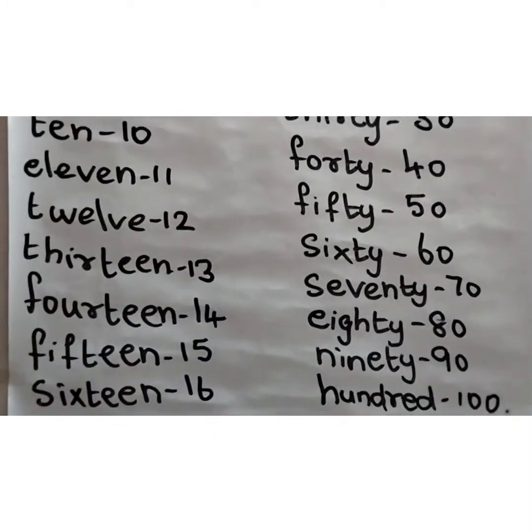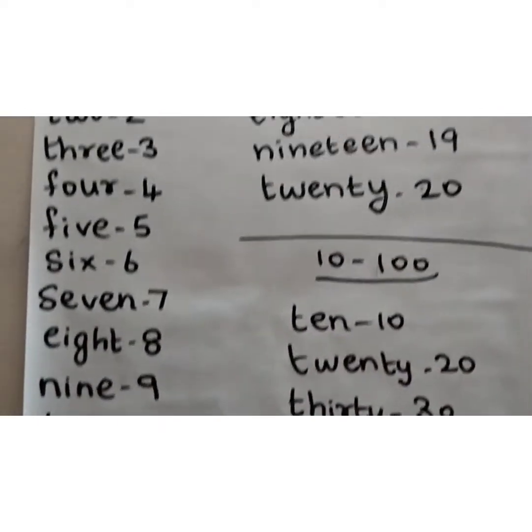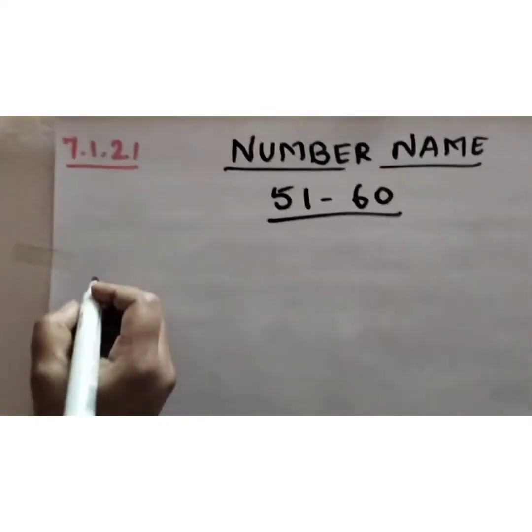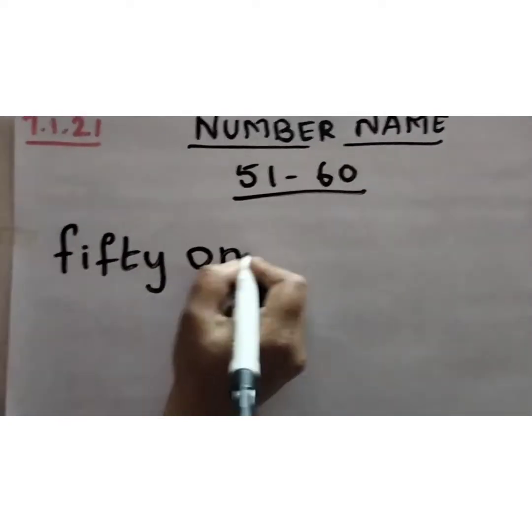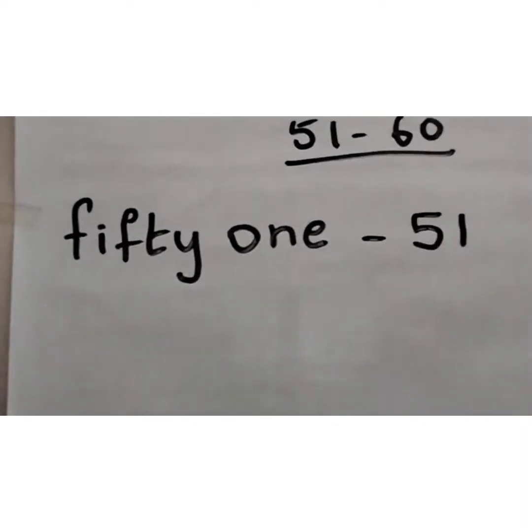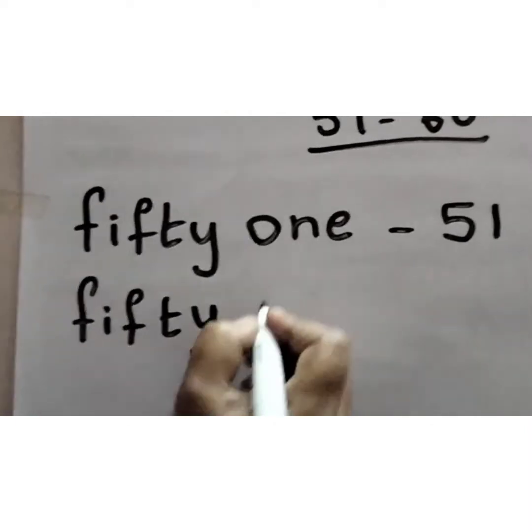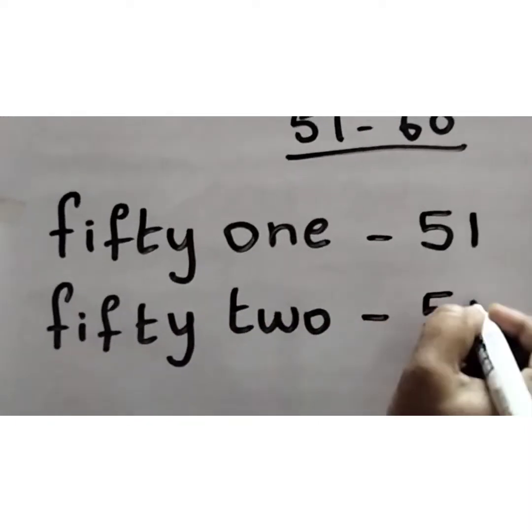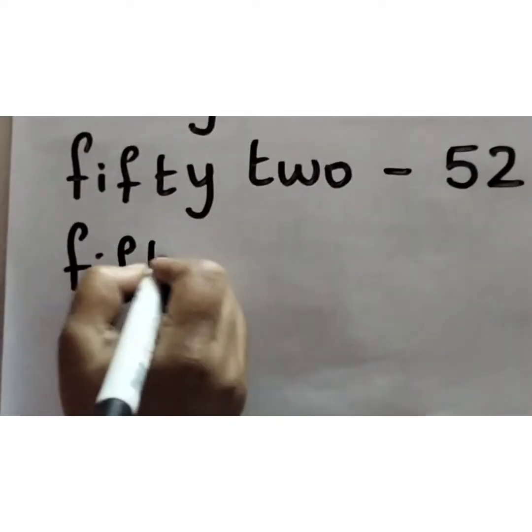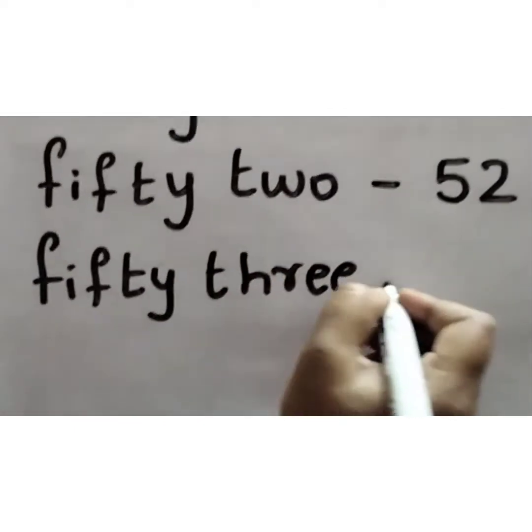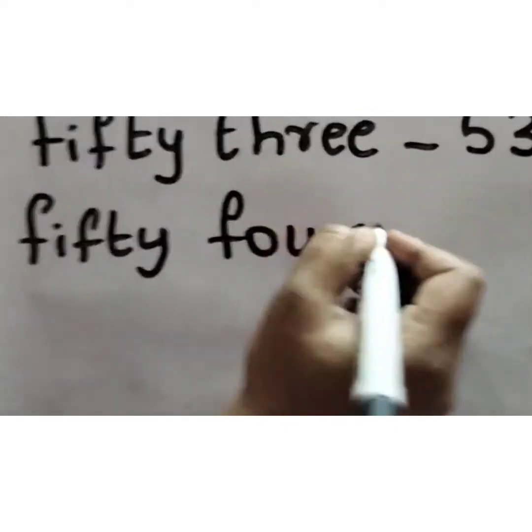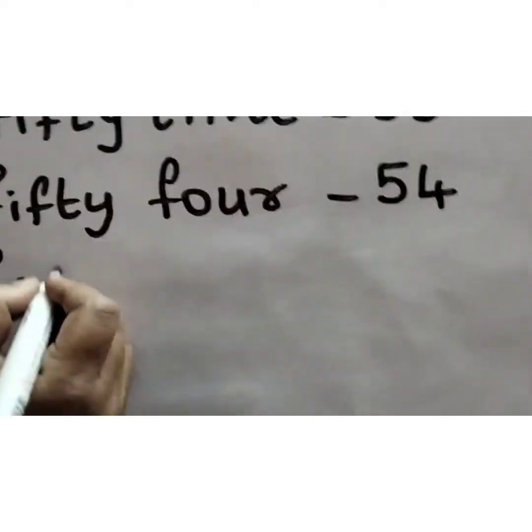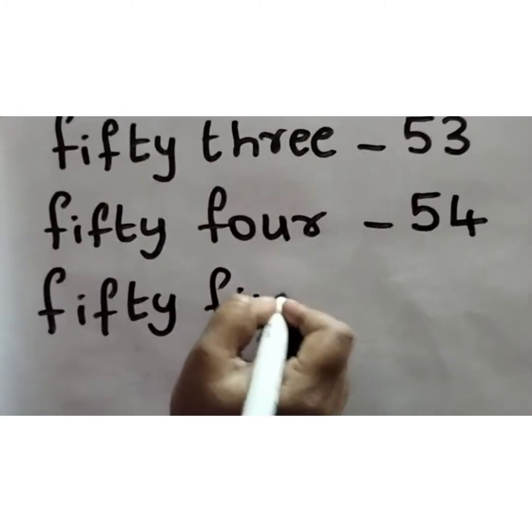So if you are thorough with number name, it is fifty-one. F-I-F-T-Y O-N-E, 51. Fifty-two, F-I-F-T-Y T-W-O, 52. What is the next number? Children? 53. Fifty-three. T-H-R-E-E, 53. Fifty-four. F-I-F-T-Y F-O-U-R, 54. Fifty-five. F-I-F-T-Y F-I-V-E, 55.